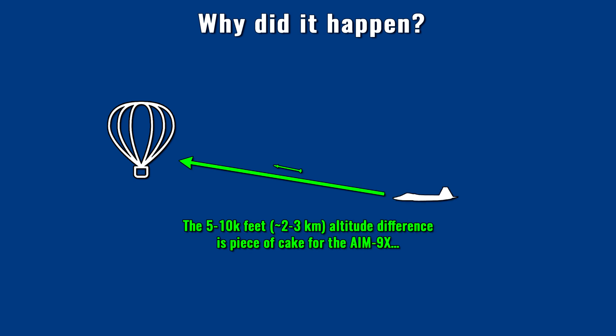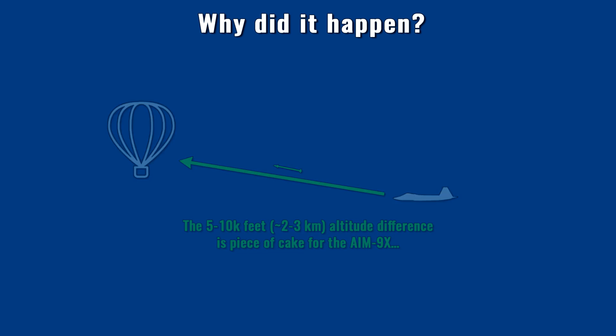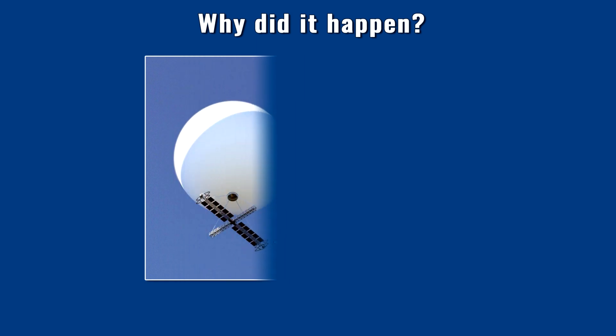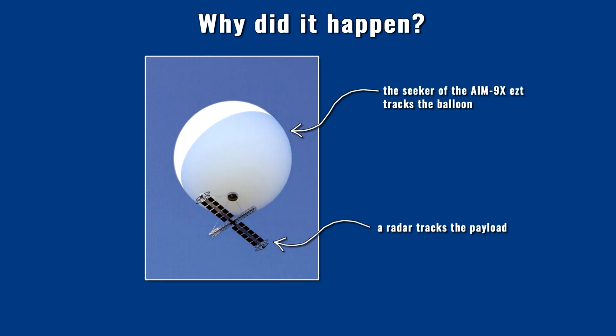The Sidewinder was more than capable of dealing with the altitude difference between the balloon and the service ceiling of the fighter jet. Moreover, since missile aiming does not require such precise maneuvering as a gun, the launch can be carried out during a slight zoom climb if necessary. The AIM-9X Sidewinder is an infrared-guided missile whose aiming can be coupled with the radar, providing enough time to lock on before launch. The payload under the balloon and its solar panels represented a huge radar-reflecting surface, allowing the Raptor's radar to easily track it.